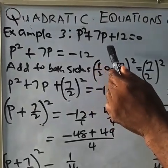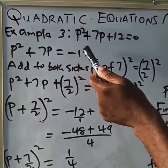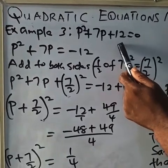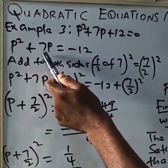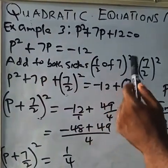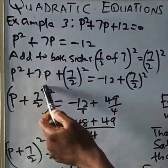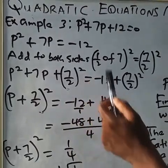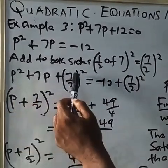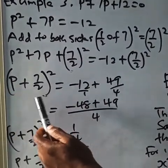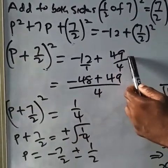Example 3: p squared plus 7p plus 12 equals zero. The coefficient of p squared is already 1, so we skip Step 1. Step 2: transfer the constant 12 to get p squared plus 7p equals minus 12. Step 3: add to both sides the square of half of 7 — that is (7 over 2) squared. So p squared plus 7p plus (7 over 2) squared equals minus 12 plus (7 over 2) squared. This is a perfect square: (p + 7/2)².